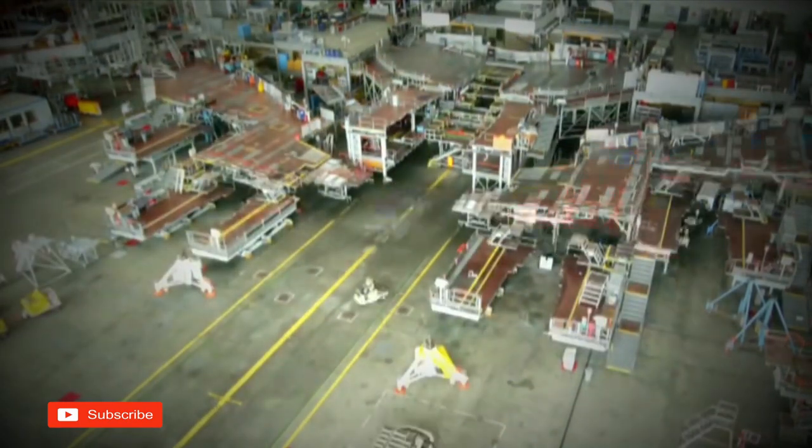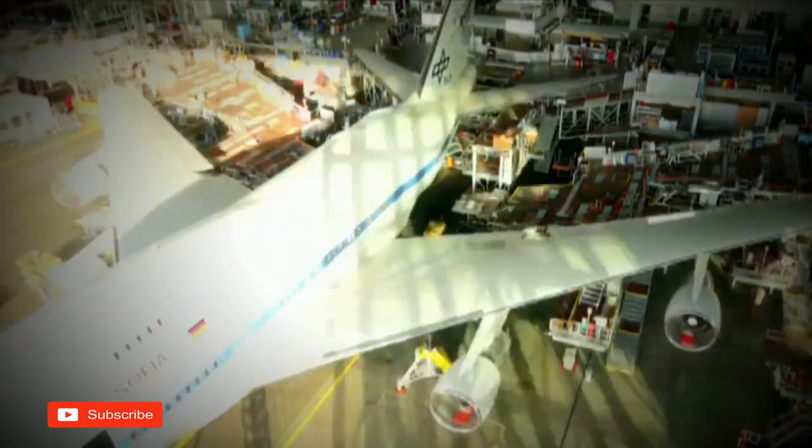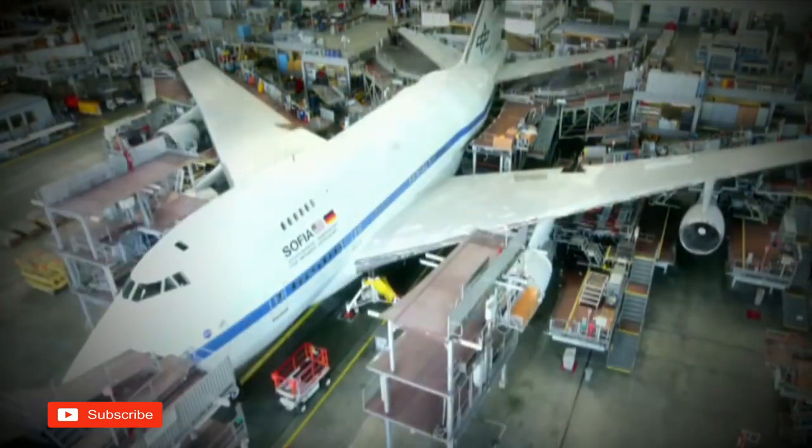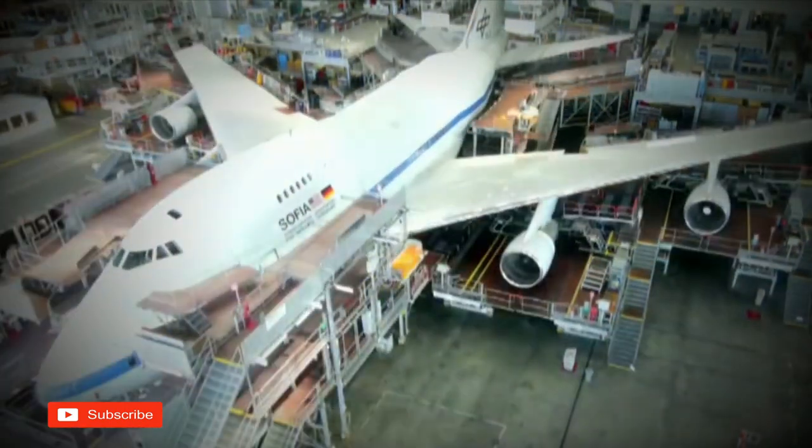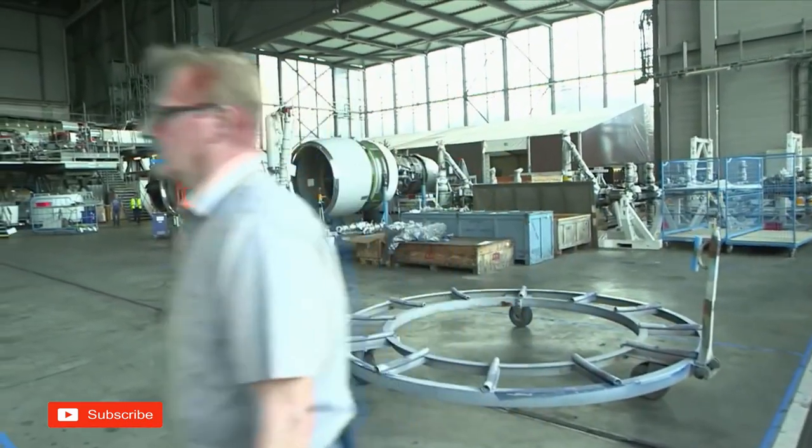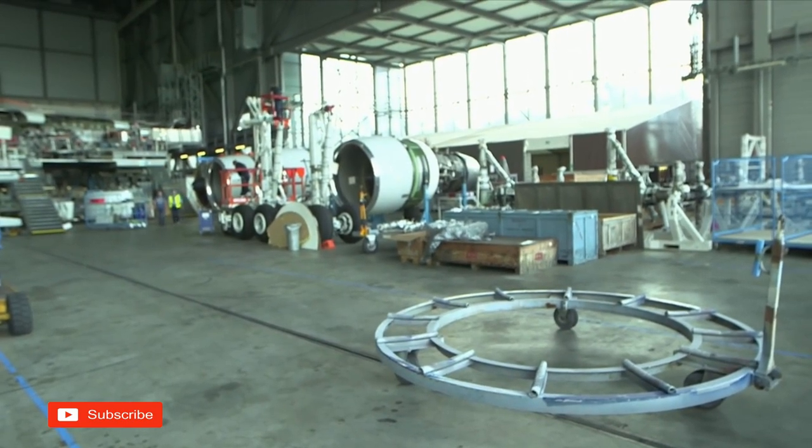Normally, the private jets of heads of government and the super-rich are converted and maintained here. So the Hamburg engineers are very familiar with extravagant aircraft. A general overhaul is normally carried out after six years and here it takes us two or three months to complete. It's much quicker for commercial aircraft, but for a plane like this, it'll take a bit longer because of all the special installations.